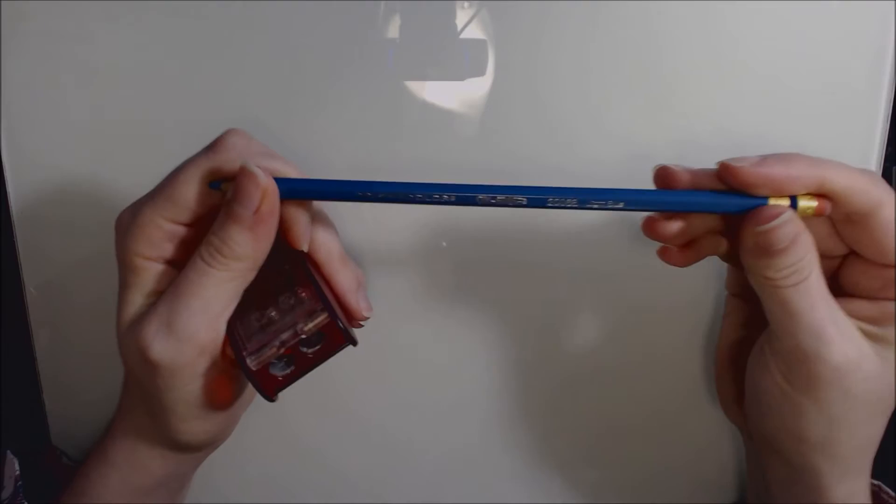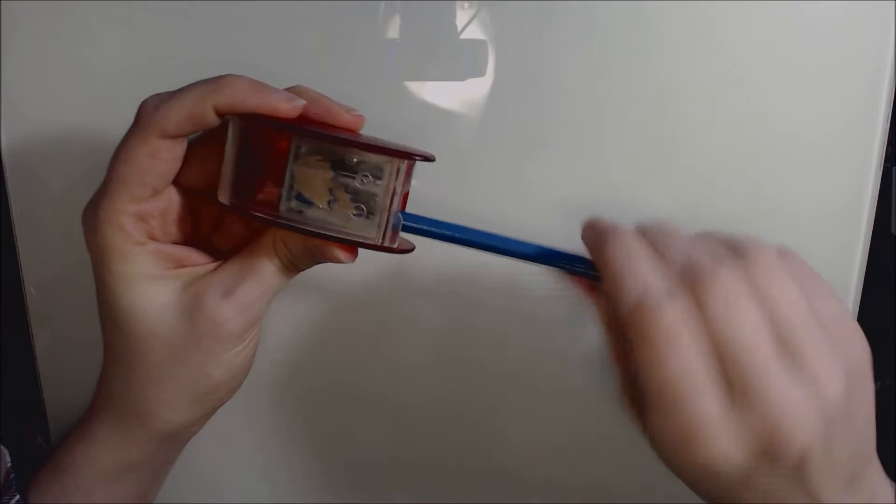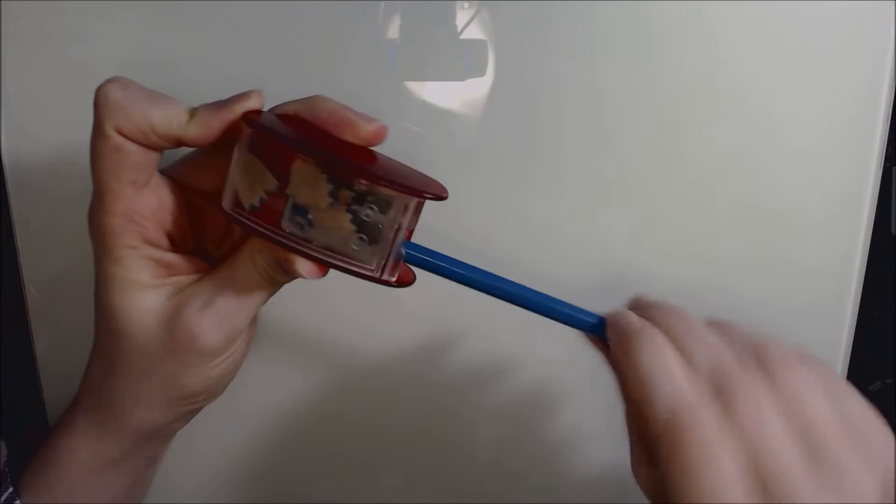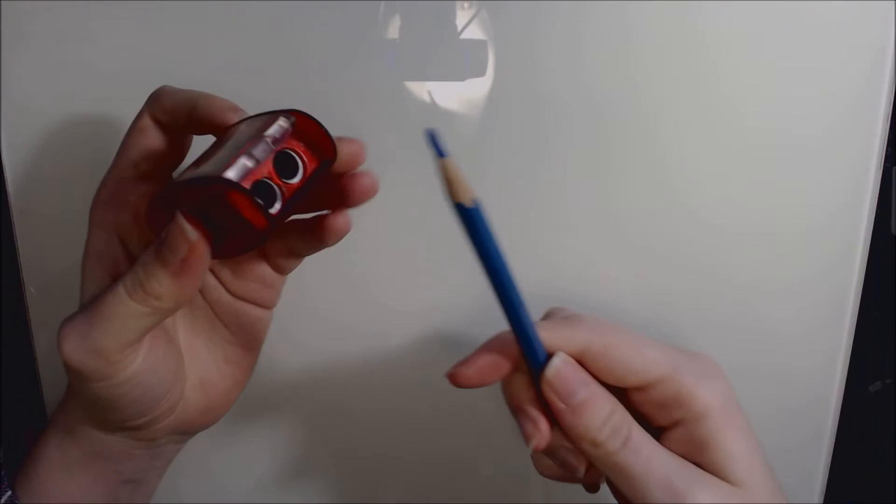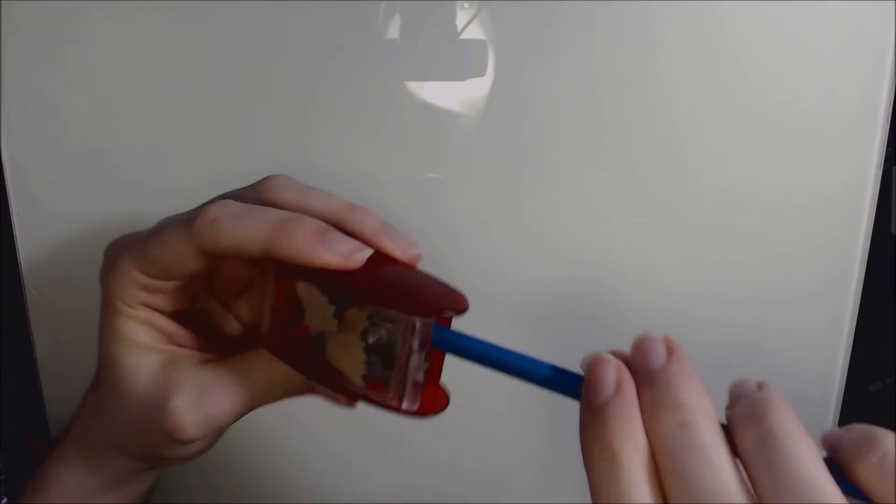So here we have a Prismacolor light blue Colorrase pencil. So it's primarily shaping down the wood on this part. You can see that there's a stop at the end here. So once your lead touches that, you will not be able to sharpen it anymore. So it looks like that to start off with. And then on this side, it sharpens the lead. There we go.